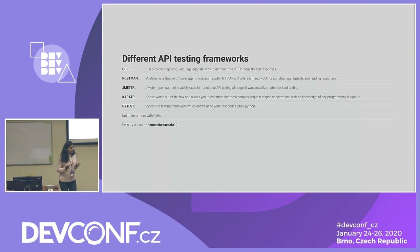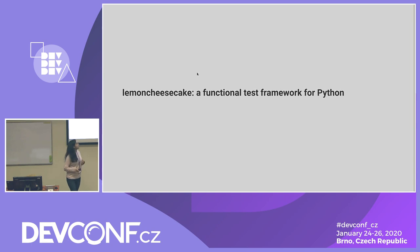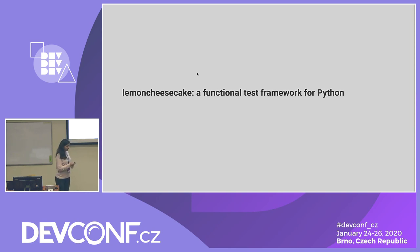It's time to try out some Lemon Cheesecake! Lemon Cheesecake is a functional test framework for Python. It makes reporting a first-class citizen and provides modern test features such as fixtures and matchers. It allows you to filter your tests using tags, add metadata to your tests, generate reports in different forms, and have nested suites as well.